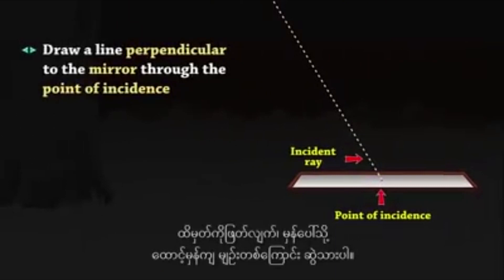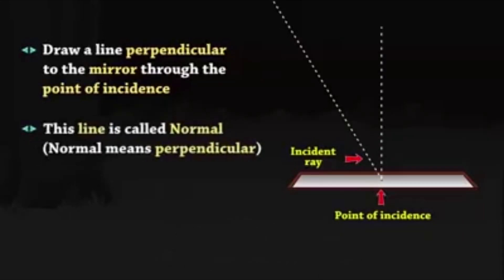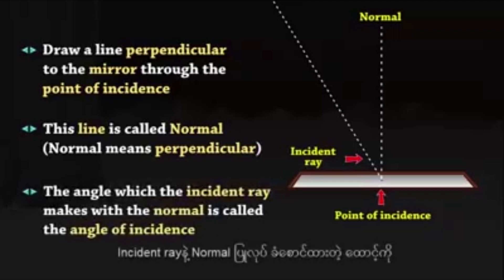Draw a line perpendicular to the mirror through the point of incidence. This line is called normal. The angle which the incident ray makes with the normal is called the angle of incidence.